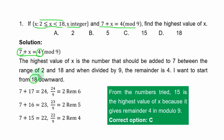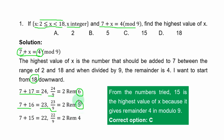We add 17 to 7 and divide by 9 to check if the remainder is 4. So 7 + 17 = 24, divided by 9 gives 2 remainder 6 — not 4. Next, 7 + 16 = 23, divided by 9 gives 2 remainder 5. Still not 4. We try 15: 7 + 15 = 22, divided by 9 gives 2 remainder 4.